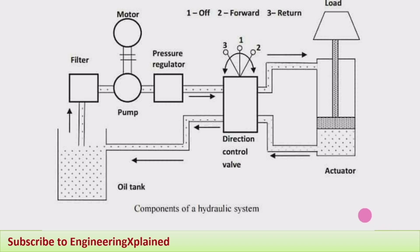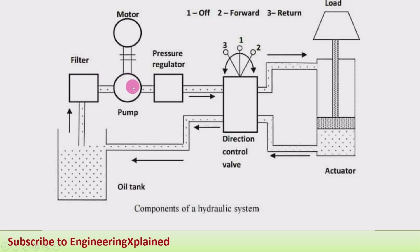Now we can also see the flow line diagram with all parts. The oil tank stores the oil; through a filter it enters the pump, which is connected to the motor. Then a pressure regulator — the pressure control valve — sends the fluid to the direction control valve.